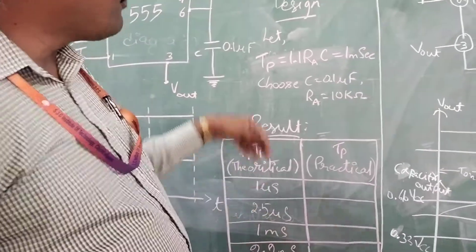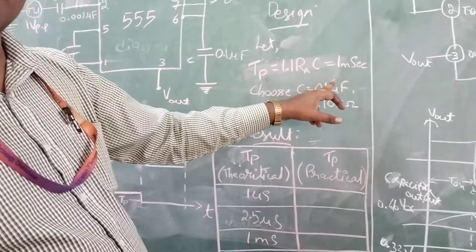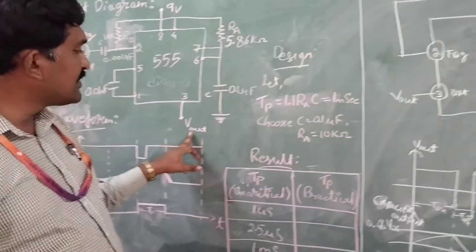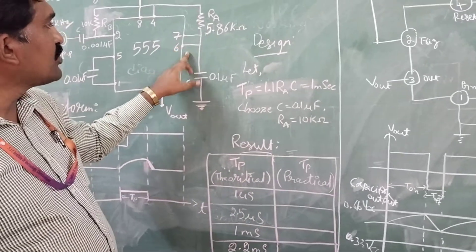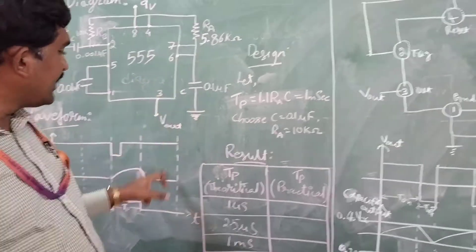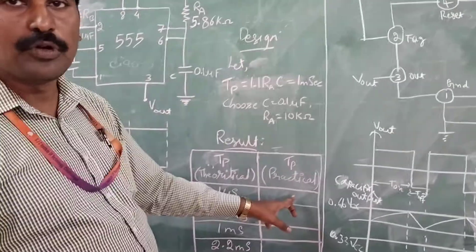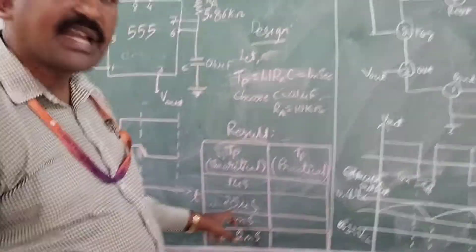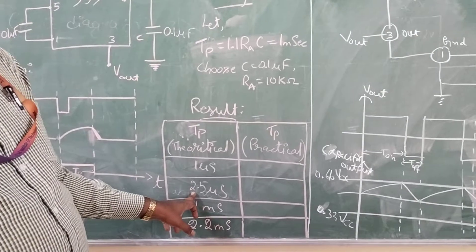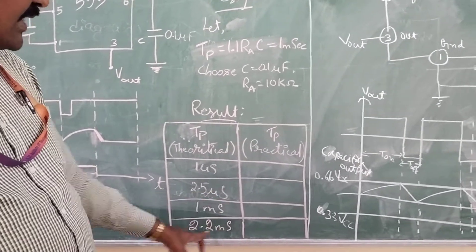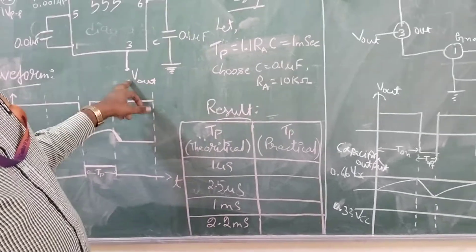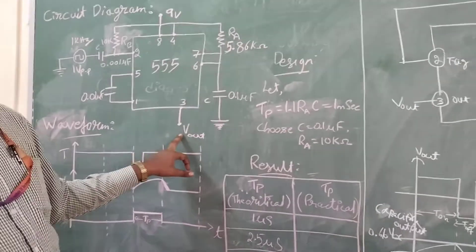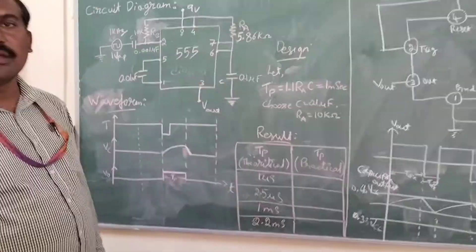Similarly, for the next reading, we have to assume 1 microsecond output pulse width. At that time, this capacitor value is going to change, and we have to substitute in the formula, rig up the circuit, and get the corresponding practical output pulse width of 1 microsecond. Similarly, for the remaining readings, you have to take the next output pulse width as 2.5 microseconds, then 3 to 4, and theoretically calculate them and get the practical values at the output of the 555 timer. This is with respect to the monostable multivibrator.